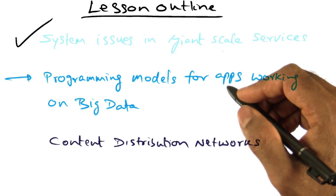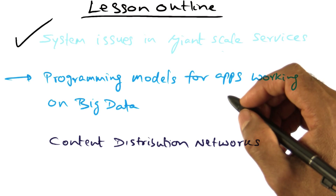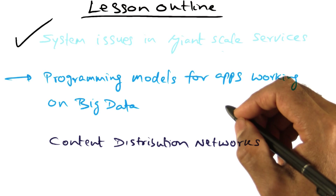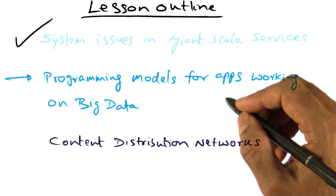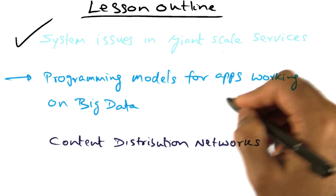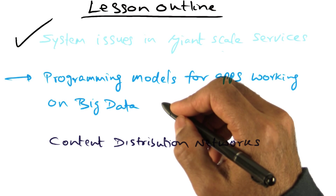One of the biggest challenges in big data applications on large computational clusters is failure handling. These data centers employ thousands and thousands of processes. When you have so many parts in any setting, failure is not a question of if it will happen — it is a question of when it is going to happen. Therefore, programming models for big data have to account for the fact that failures are to be expected in this environment.